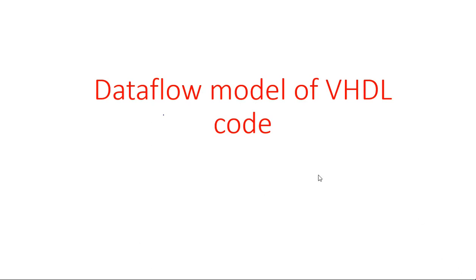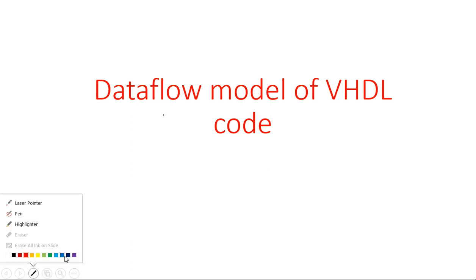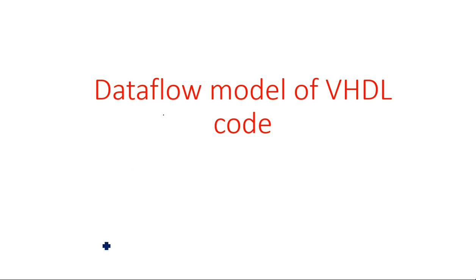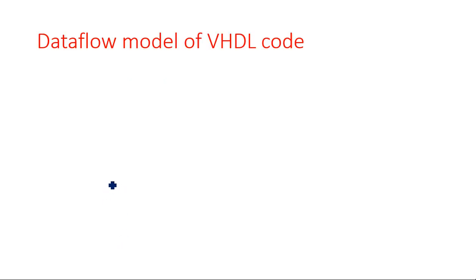In this video I'm going to explain the data flow model of VHDL code. As mentioned in previous videos, there are three different styles of VHDL code available in the architecture model: the first is the behavioral model, the second is the data flow model, and the third is the structural model.